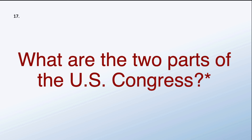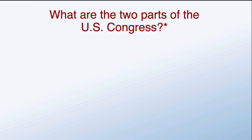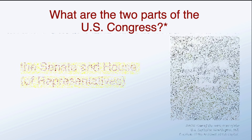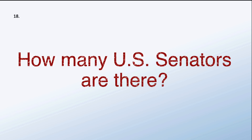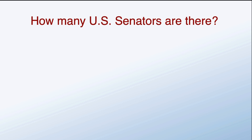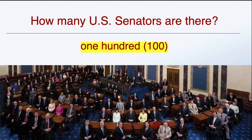What are the two parts of the US Congress? The Senate and House — you can also say the Senate and House of Representatives, but we usually shorten that to just the House. How many US Senators are there? One hundred senators.